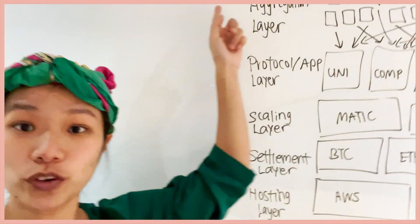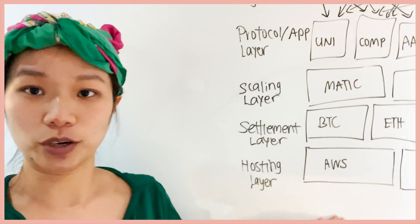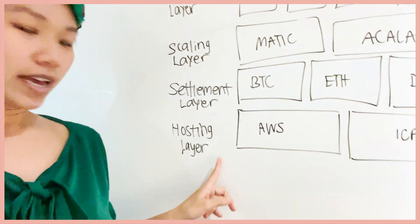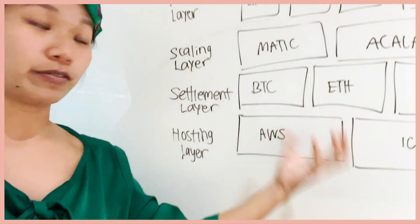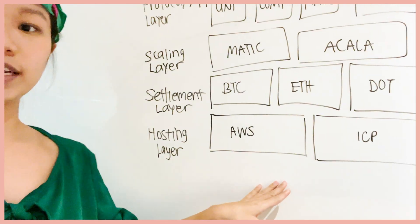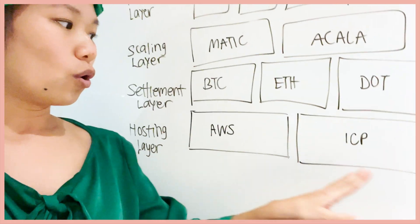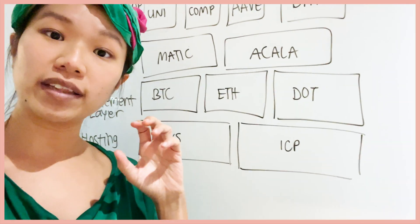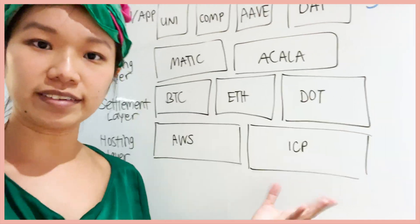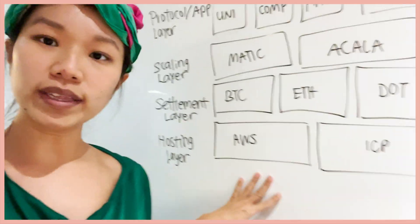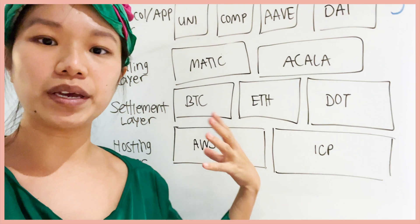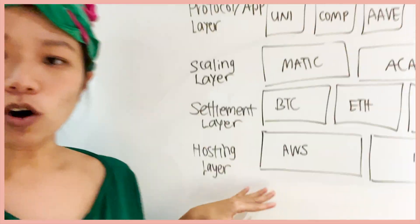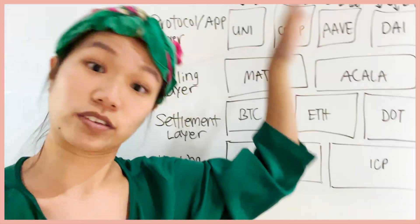We can break them down into a few layers. We start at the bottom because that's the base layer — we have the hosting layer. The hosting layer is really simple. It's where you host all these different transactions that are happening, and that could be stuff like AWS, Amazon Web Service, or this new thing called the Internet Computer Protocol. You have one that's centralized — AWS — and one that is looking to be the decentralized version called ICP. They just launched recently. That's the hosting layer — you host all these different transactions that are going on.